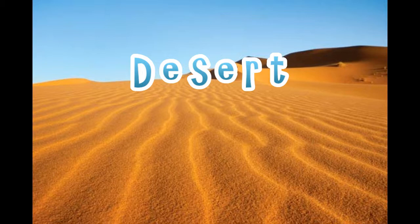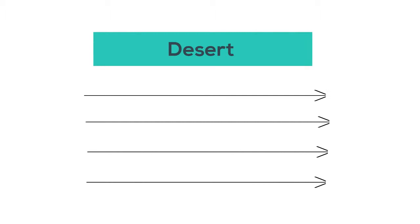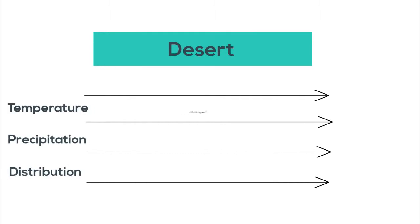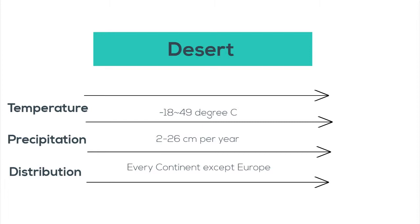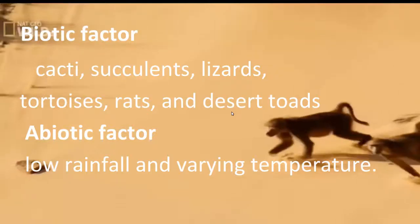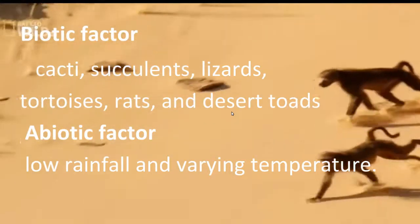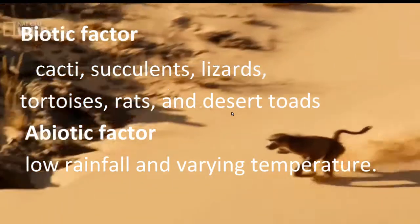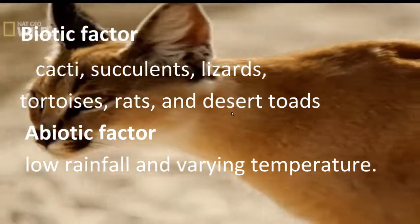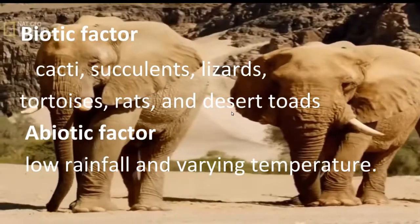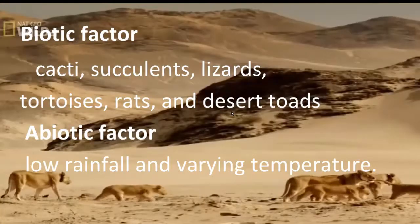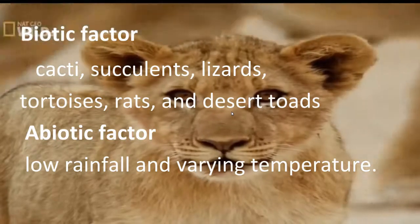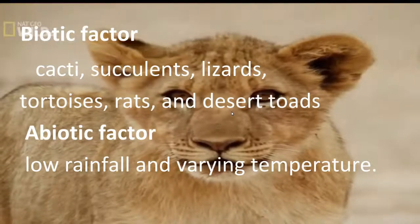A desert is any area in which the annual rate of evaporation exceeds the rate of precipitation. Its temperature ranges from 20 to 49 degrees Celsius during the day and minus 18 to 10 during the night. Its biotic factor includes cacti, succulents, lizards, tortoises, rats, and desert toads. Its abiotic factor includes low rainfall and varying temperature.